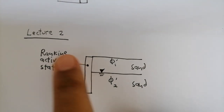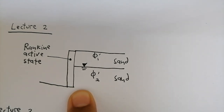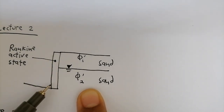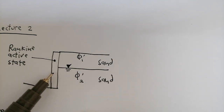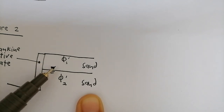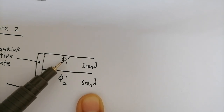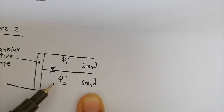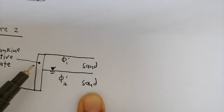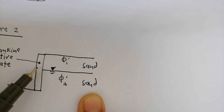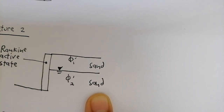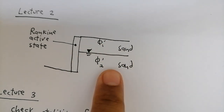In Lecture 2, it gets more complicated. We still have a retaining wall with two layers of sand and a groundwater table, but in this example the friction angles are different — friction angle one is around 30 degrees and friction angle two is 35 degrees. In this case, the wall is in the Rankine active state, as opposed to Lecture 1 which was at-rest.